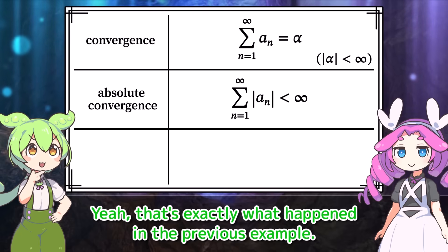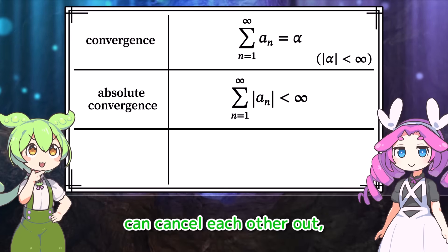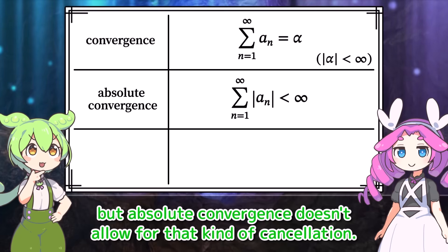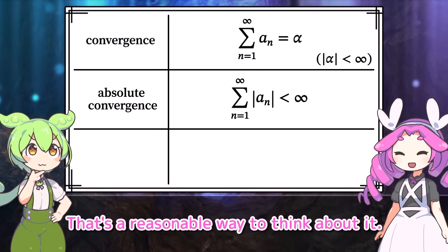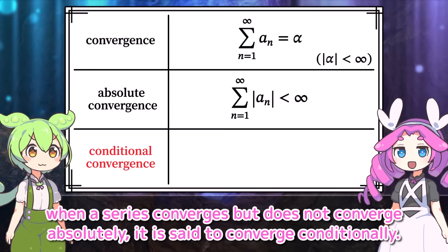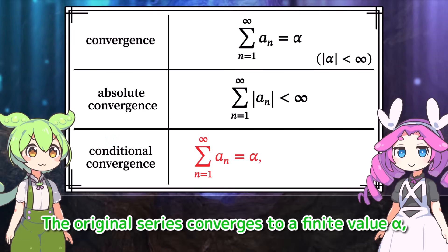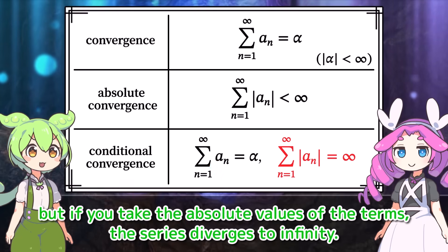In ordinary convergence, positive and negative terms can cancel each other out, but absolute convergence doesn't allow for that kind of cancellation. As in the case of the alternating harmonic series, when a series converges but does not converge absolutely, it is said to converge conditionally. The original series converges to a finite value alpha, but if you take the absolute values of the terms, the series diverges to infinity.